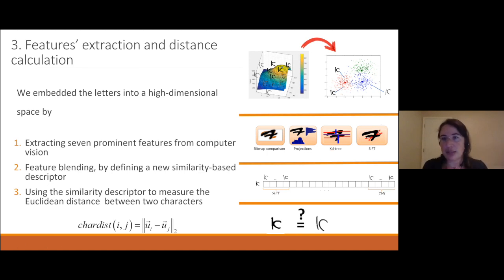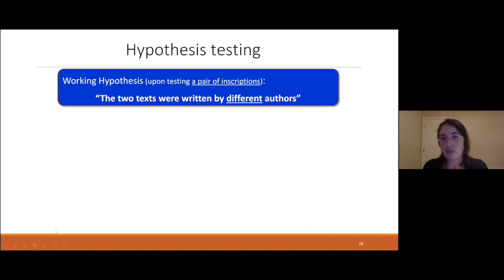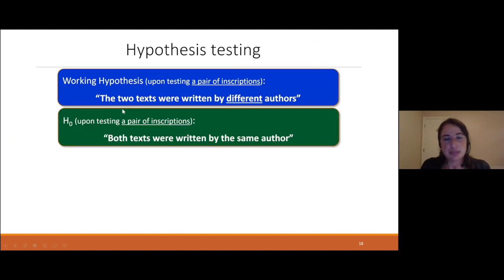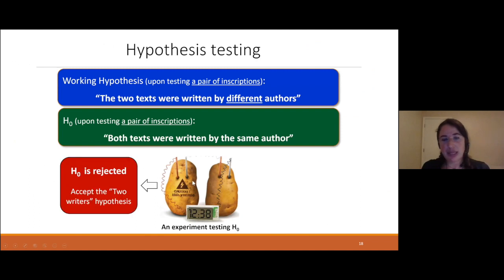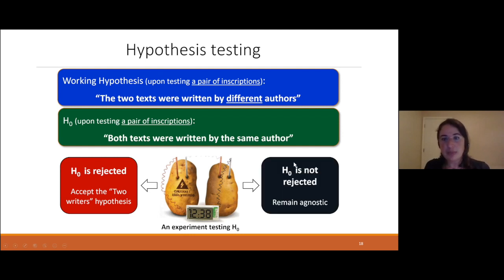We had seven different features comprising the angle between strokes of the writing, the shape of the letters, and so on. We can now measure the distance between two letters using those features. With this embedding from letter space to feature space, we can ask whether two inscriptions were written by different authors. In statistics, it's easier to negate a hypothesis than to prove one. Our null hypothesis H0 was that both texts were written by the same author, and we tried to find proof that this was not true.